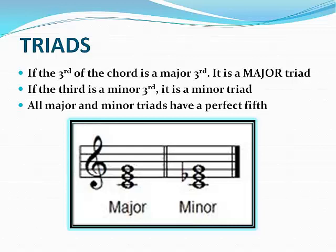The only difference between a major and a minor triad is the interval from the root to the third. The major triad has a major third above the root and the minor triad has a minor third above the root. This is what the major triad sounds like. And this is what the minor triad sounds like.